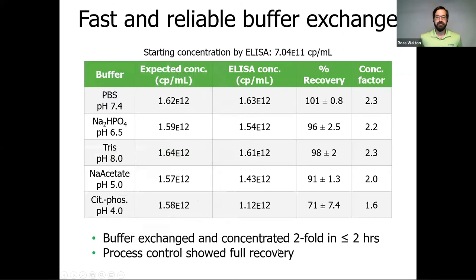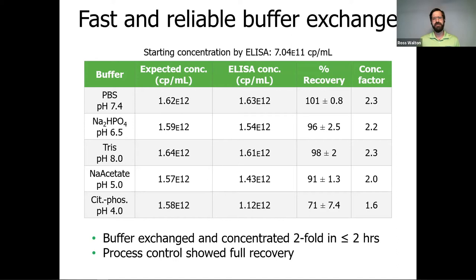Big Tuna was able to complete all buffer exchanges and concentration in under two hours. Looking at the first row, the process control showed a full recovery of about 100%, which is great. The other buffers had similarly high percent recoveries, except for that citrate phosphate buffer, which had a really low percent recovery. We were using ELISA to quantify concentrations before and after Big Tuna, and since all other buffers were working as expected, we thought something special was going on with the citrate phosphate buffer. Using UNCLE, we were able to find out what that was.